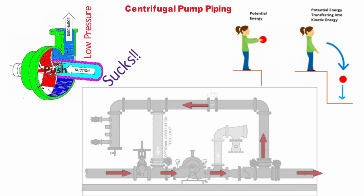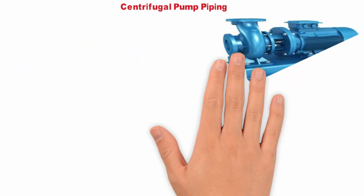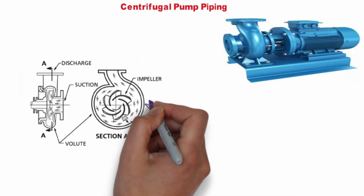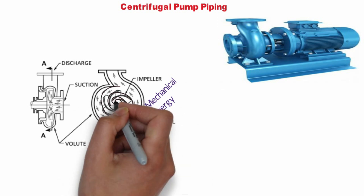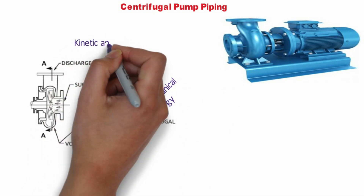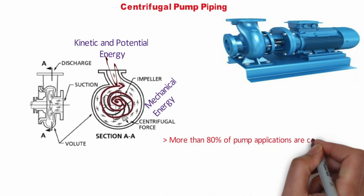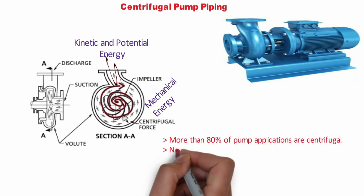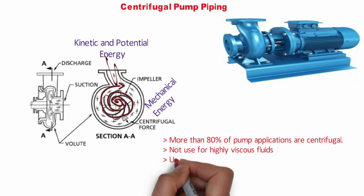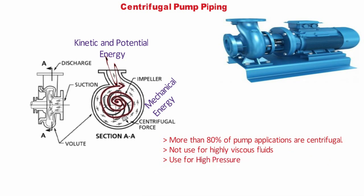Head pressure is the pressure due to the liquid surface being above the centerline of the pump. In this video we are going to talk about centrifugal pumps, though there are many other types available in the market. A centrifugal pump transfers mechanical energy from a rotating impeller into the kinetic and potential energy required by a system. 85% of pump applications are centrifugal. Centrifugal pumps don't do well with highly viscous fluid and are used for high pressure applications.